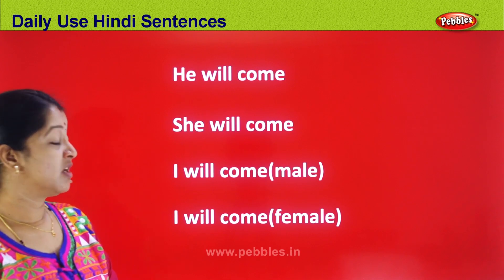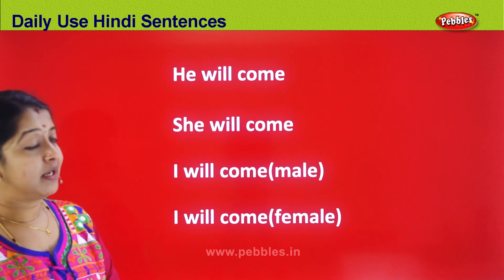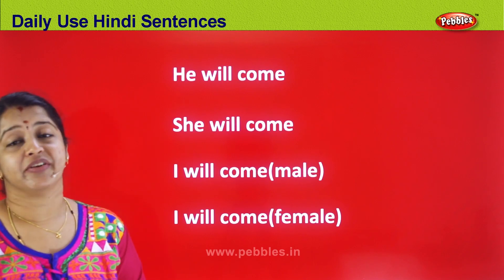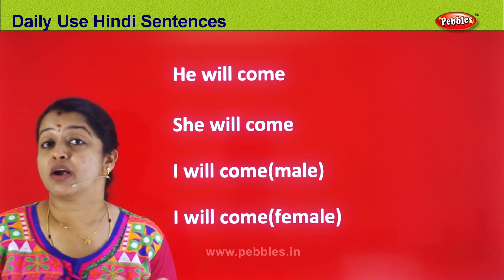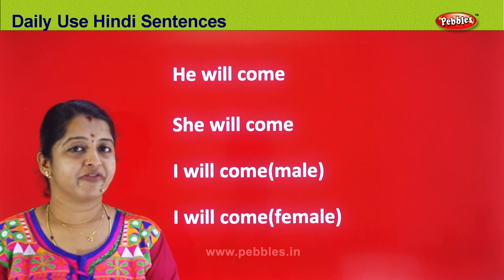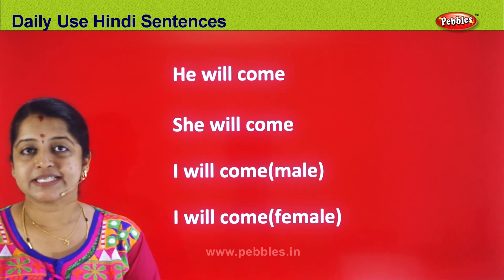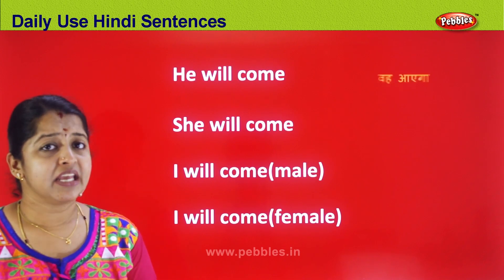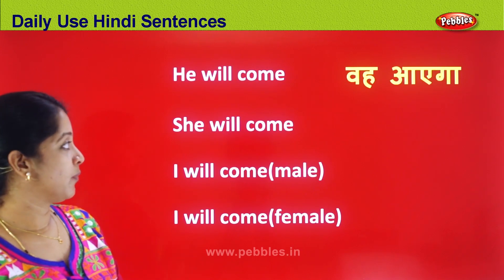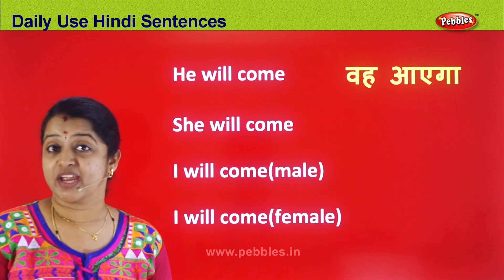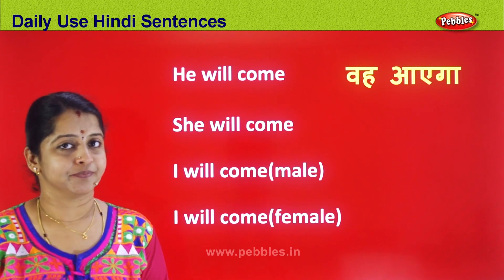Next set of words: 'he will come,' 'she will come,' 'I will come' (male), and 'I will come' (female). Suppose everyone is planning a party and someone asks will Mukesh come — you say yes, he will come: Vah Ayega. Mukesh Ayega. Vah Ayega.